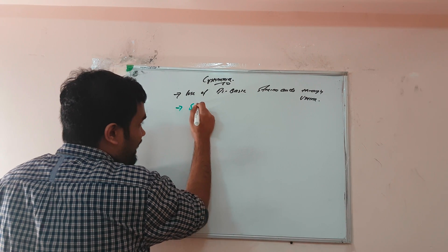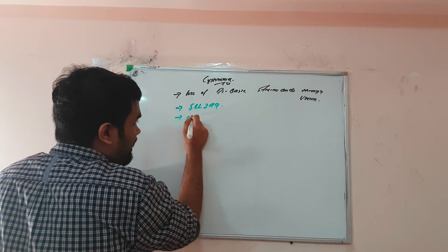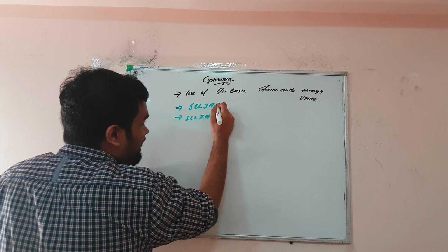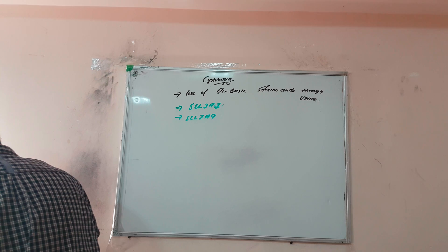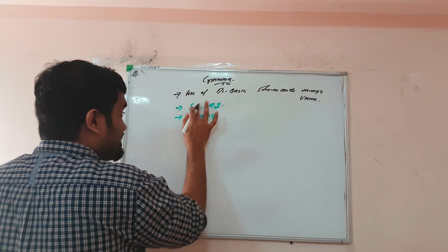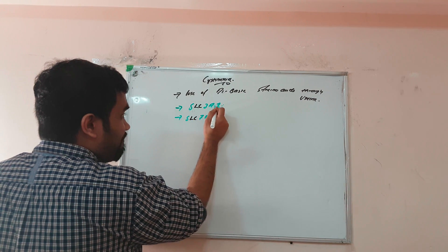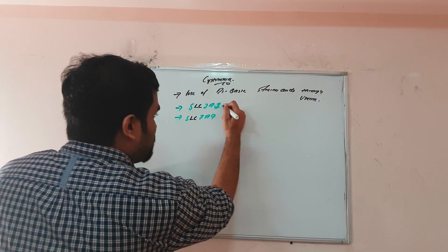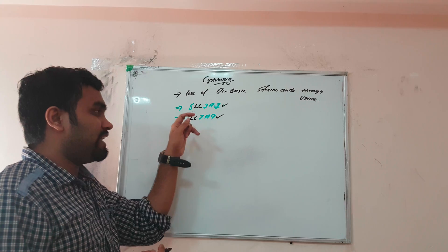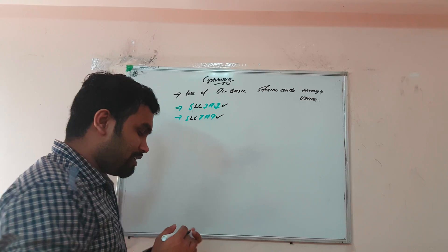The gene defects involved are SLC3A1 and SLC7A9. Just remember these for MCQs — the gene defects in cystinuria are SLC3A1 and SLC7A9.